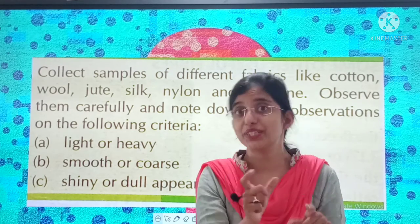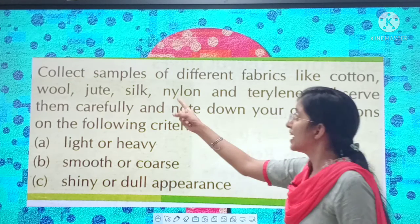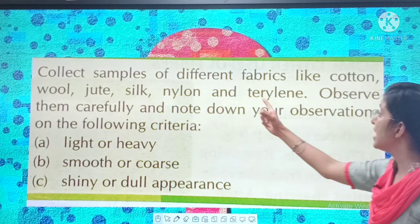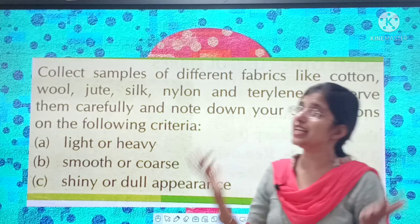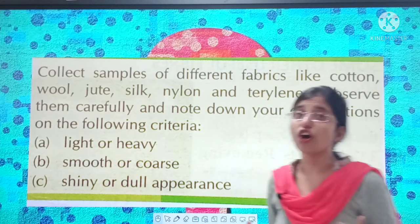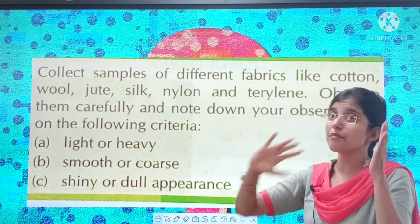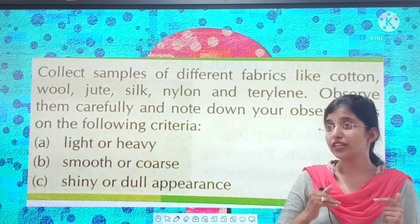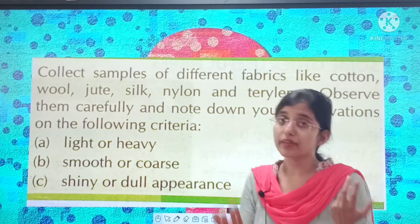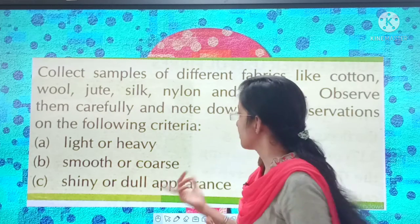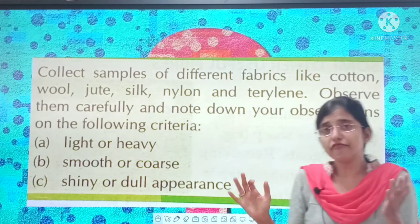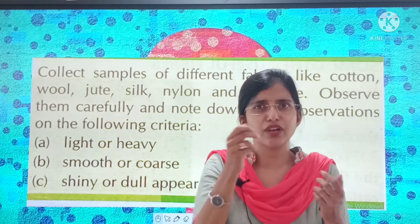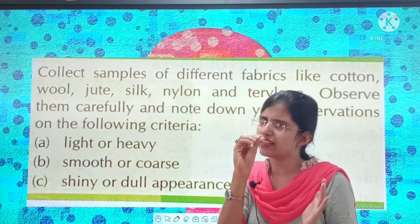Our class is over and we will do one small activity at home. Collect samples of different fabrics like cotton, wool, jute, silk, nylon, and terylene. Nylon and terylene are synthetic fibers; wool, jute, silk, and cotton are natural fibers. Observe them carefully and note down your observations on the following criteria: A — light or heavy; B — smooth or coarse. Coarse means it is not smooth, it has a rough texture.